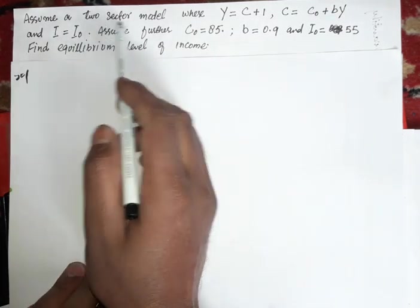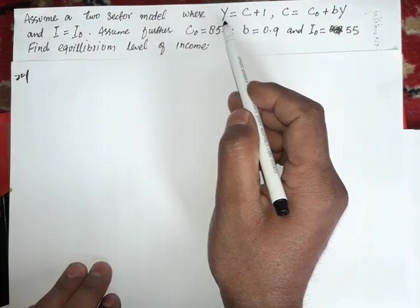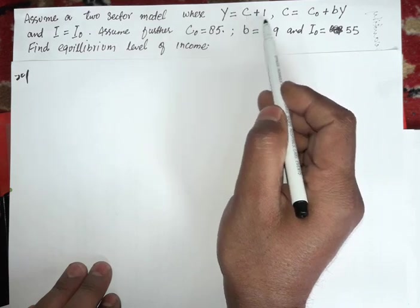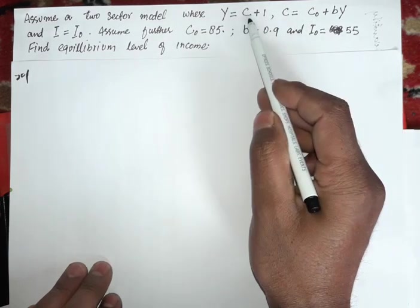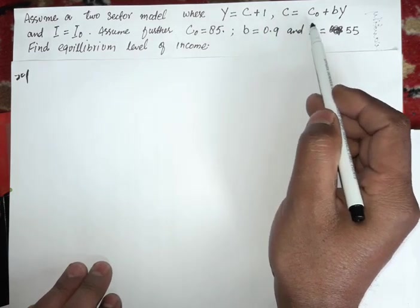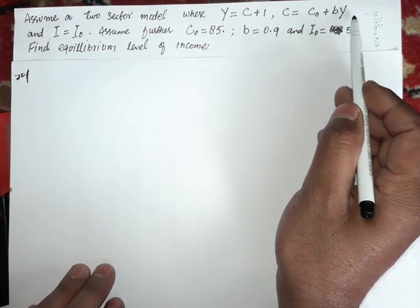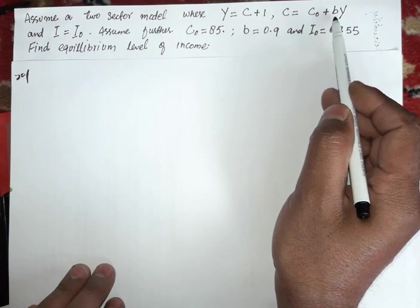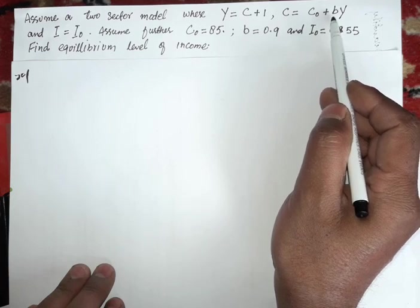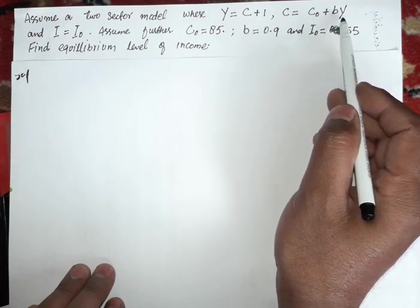Assume a two-sector model where aggregate income equals aggregate consumption plus aggregate investment. Aggregate consumption is C0 (autonomous consumption) plus B times Y, where B is marginal propensity to consume (MPC) and Y is disposable income.